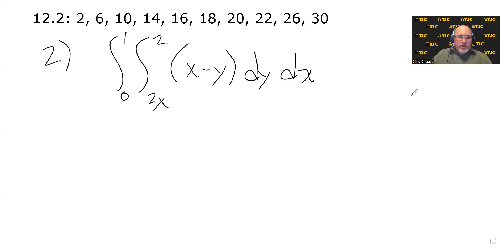All right, here's homework 12.2, question number two. We're doing the iterated integral from 0 to 1 and then from 2x to 2 of x minus y dy dx.